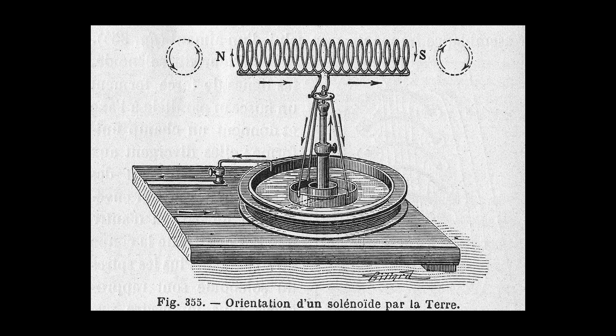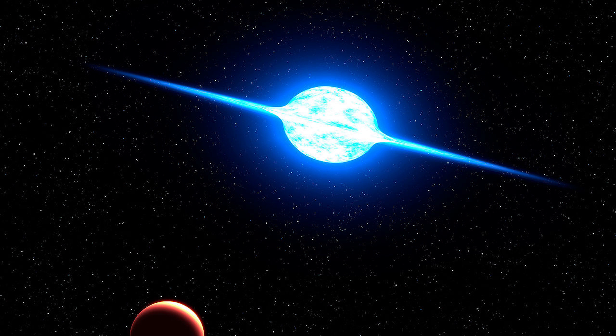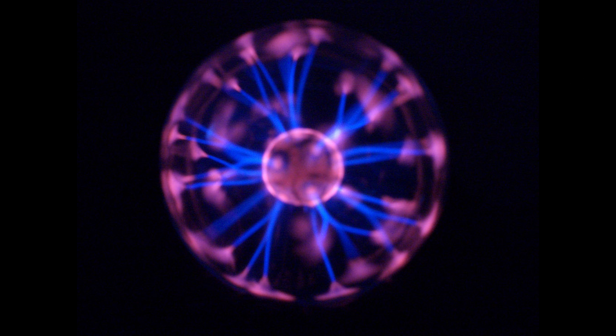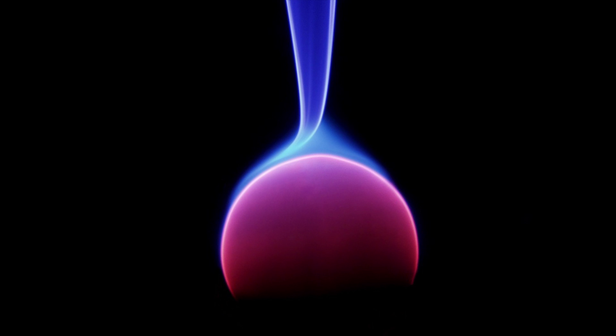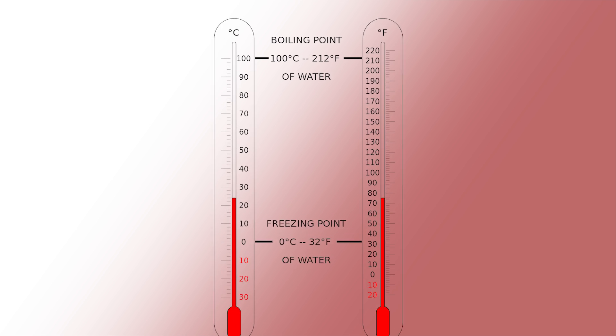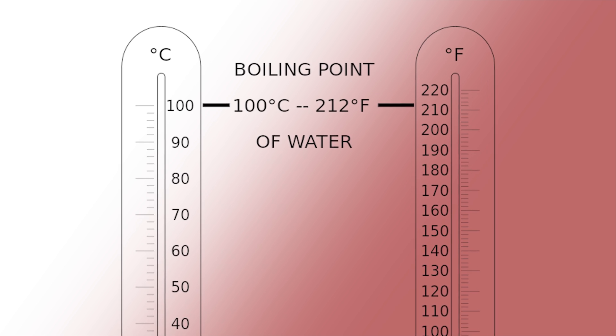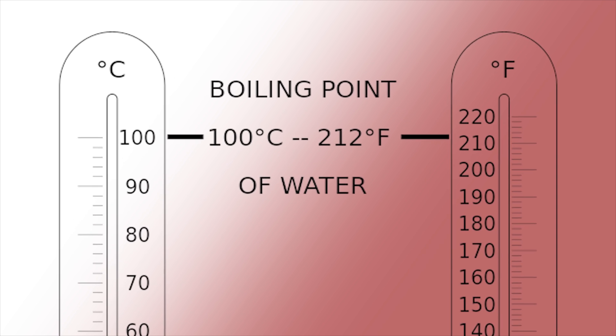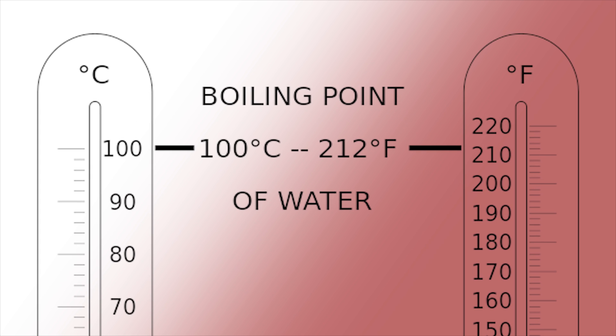But what got me is when I was looking into plasma, I went to NASA to see what their definition was, and it says this: a plasma is sometimes referred to as being hot if it is nearly fully ionized or cold if only a small fraction, for example, 1% of the gas molecules are ionized. But other definitions of the terms hot plasma and cold plasma are common. Even in cold plasma, the electron temperature is still typically several thousand degrees Celsius.